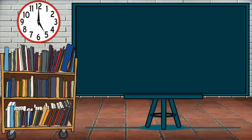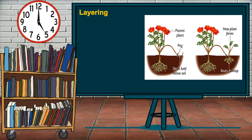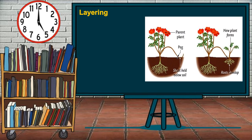Another artificial method is layering. This is a method by which a plant grows from the buried portion of the parent plant. It is done by bending a branch until it reaches the soil. The part touching the soil is partly covered, and as soon as the new plant is established, it is cut from the parent plant and transferred to a new place. An example is rose.